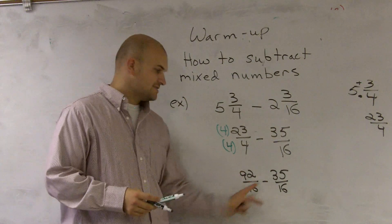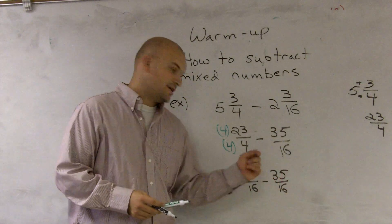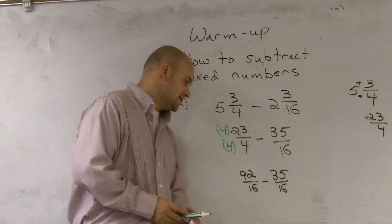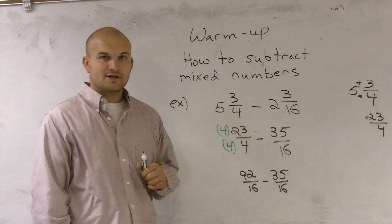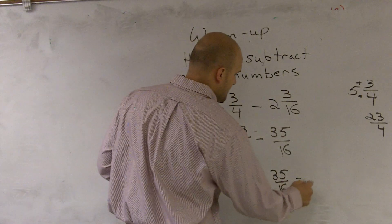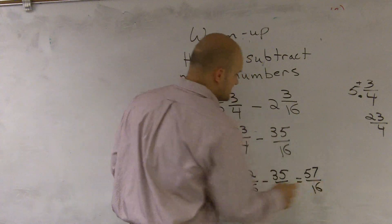Then, now I have the same denominator, I can simply subtract my numerators, and my denominators will remain the same. 92 minus 35 will become 57 over 16.